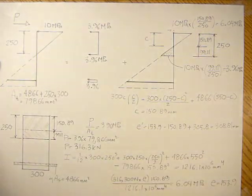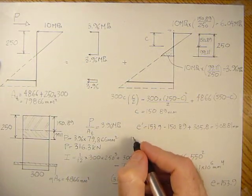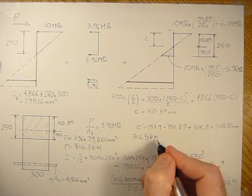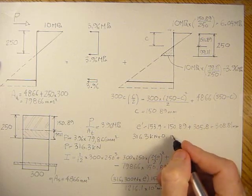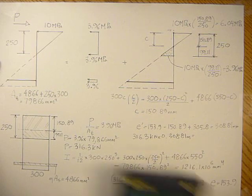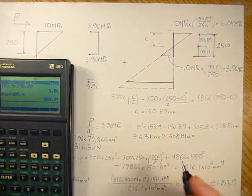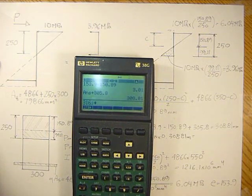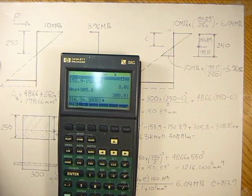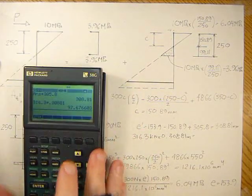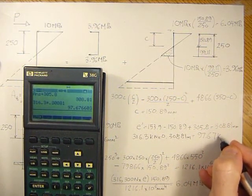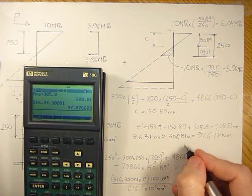Then by taking P times e prime, 316.3 kilonewtons times 0.30881 meters, we're going to have M prime. So 316.3 times 0.30881 meters gives me 97.67 kilonewton-meters. So that's the M prime value.